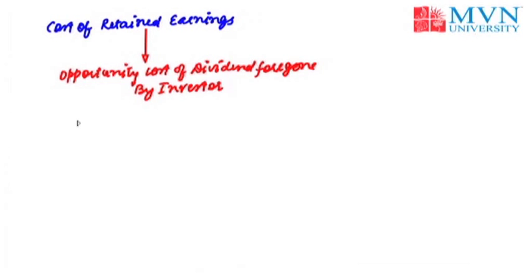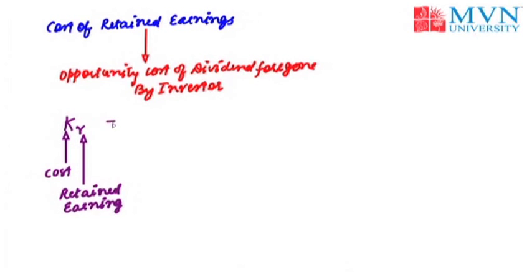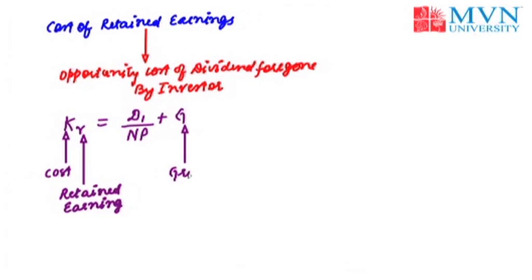The formula to calculate the cost of retained earnings will be KR, where K stands for cost and R stands for retained earnings. The formula remains the same as in the case of equity share capital where the dividend grows with time. Therefore, the formula will be: KR = D1 / NP + G, where D1 stands for the dividends which the investor has foregone, NP stands for the net proceeds, and G stands for growth.